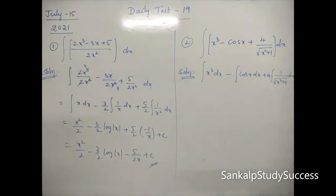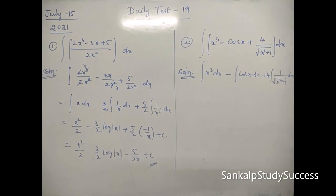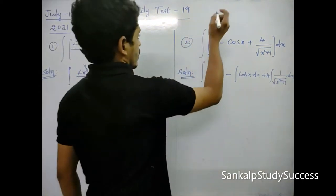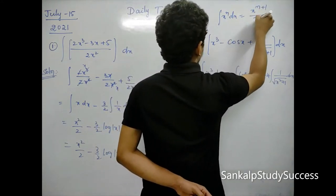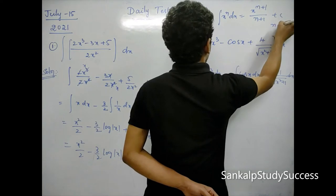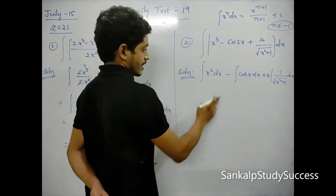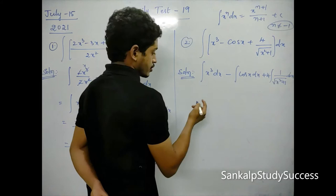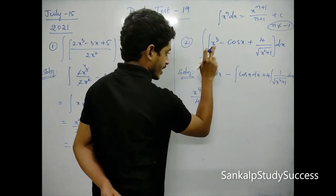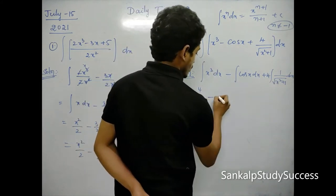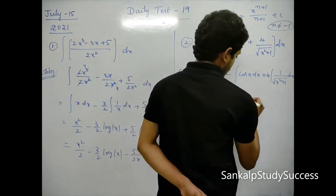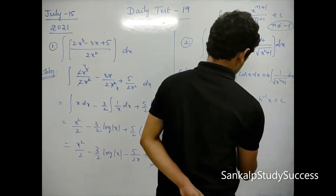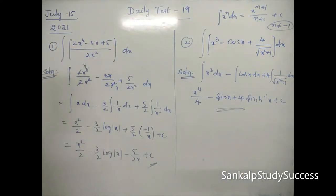Now apply the x power n formula: integral xⁿ dx = x^(n+1)/(n+1) + c, where n is not equal to minus 1. So here n = 3, giving x⁴/4. The final answer is x⁴/4 minus sin x plus 4 sin⁻¹x plus c.